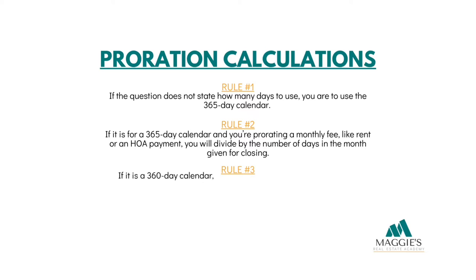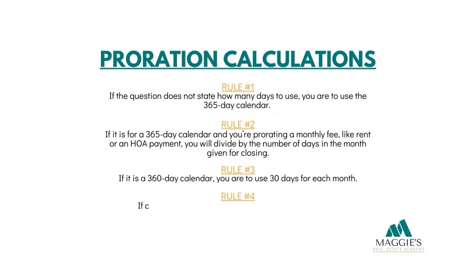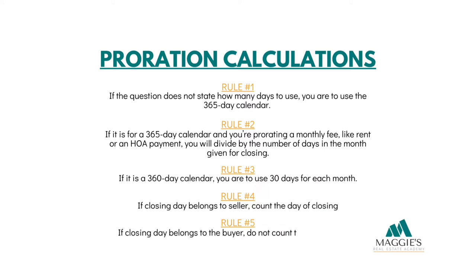Number three: if it's a 360-day calendar, you are to use 30 days for each month — and yes, even February too. Number four: if closing day belongs to the seller, you count the day of closing in the total days in step two, which we'll discuss next. Number five: if the day of closing belongs to the buyer, you do not count the day of closing, which we'll also discuss next.